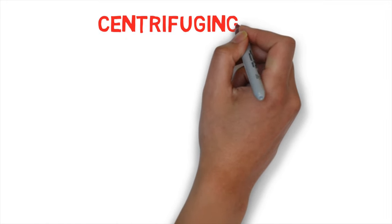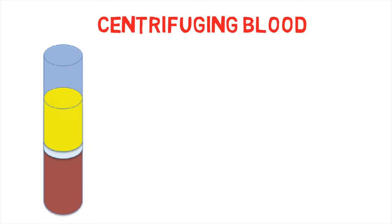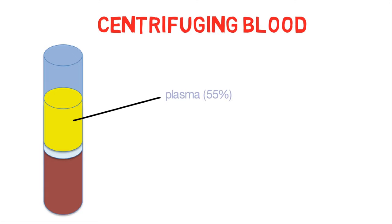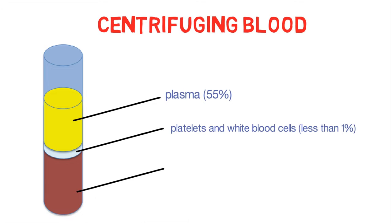If we were to centrifuge the blood, that means to spin it around really quickly, it would separate the blood out into its different sections. And what we can actually see is that the part of the blood which is the plasma makes up 55% of the blood. If we think about white blood cells and platelets, they only make up less than 1% of the blood. The rest of it is all red blood cells, so 45% carrying oxygen around the body to where it's needed.